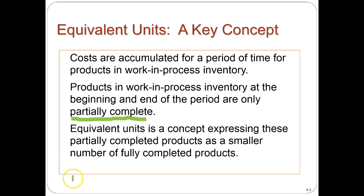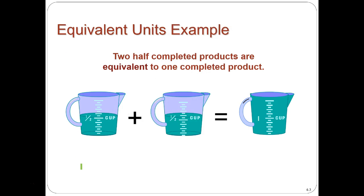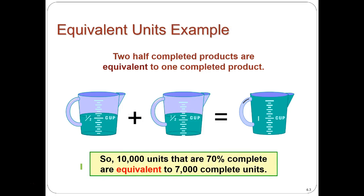Equivalent units is a concept expressing these partially completed products as a smaller number of fully completed products. In the Taffy example, we had a creation and mixing department and then a packaging department. The question is how to allocate costs between the two departments. We use this equivalent unit concept: if we have two half-completed products, they're equivalent to one whole product.